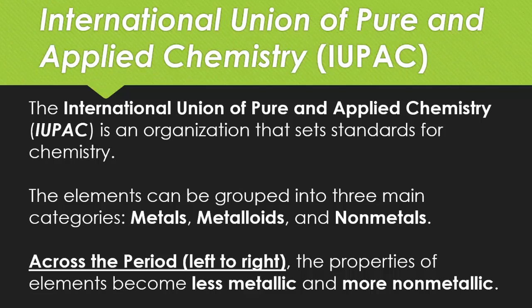So everything we teach you in chemistry has been approved by the IUPAC, which is the International Union of Pure and Applied Chemistry. It is an organization that sets the standards for our chemistry class and chemistry in the world. The elements can be grouped into three main groups in the periodic table: metals, metalloids, and nonmetals, which we discussed in the last video.